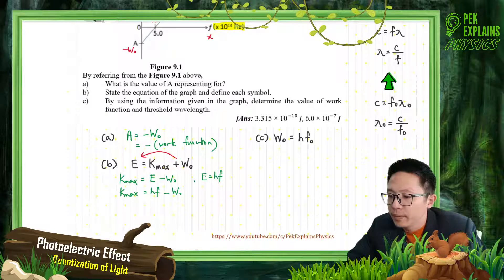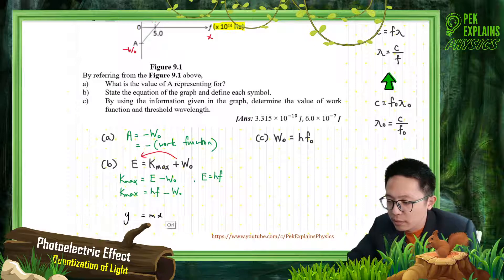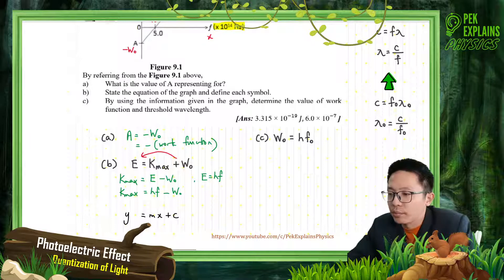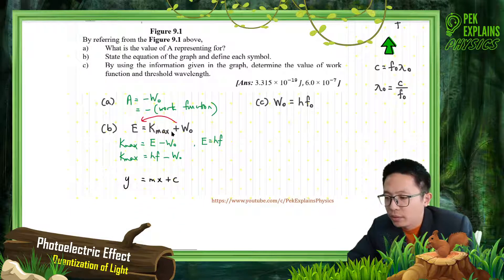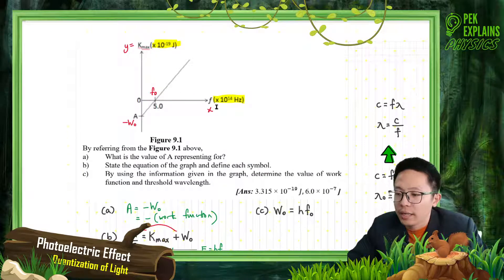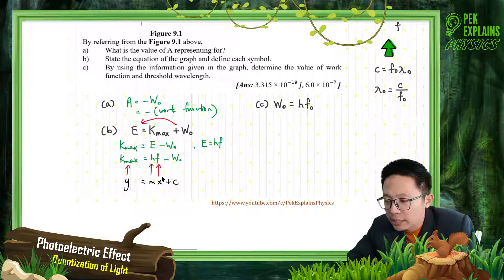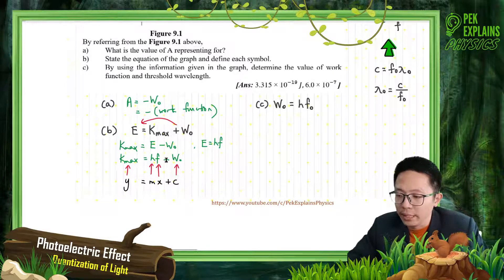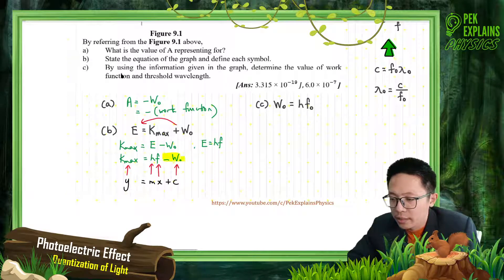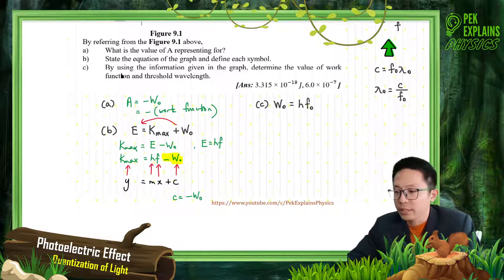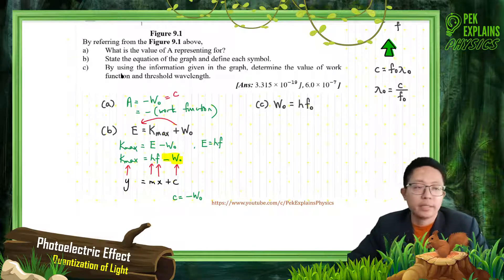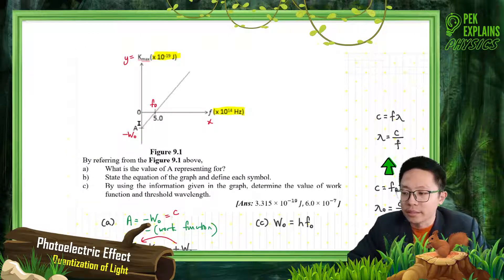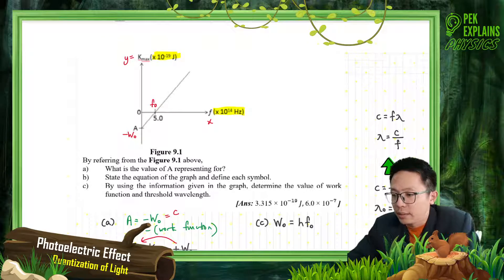We can compare with y equal to mx plus c. From there, we can know: the y-axis is Kmax, the x-axis is F, and the gradient is H. The C — which is the y-intercept — is negative W0. So A is the C, the y-intercept.